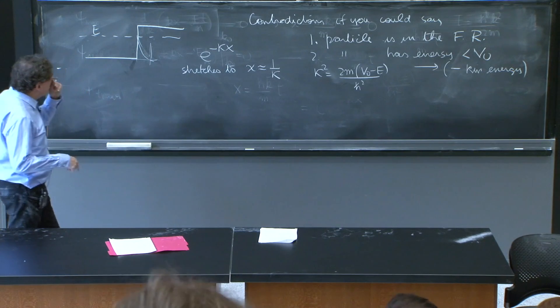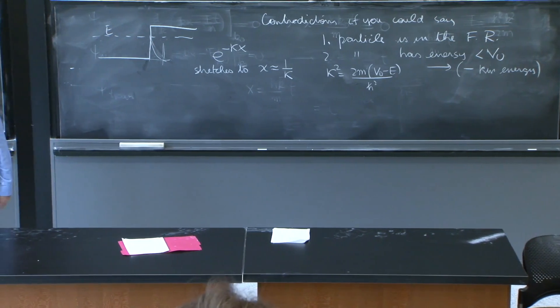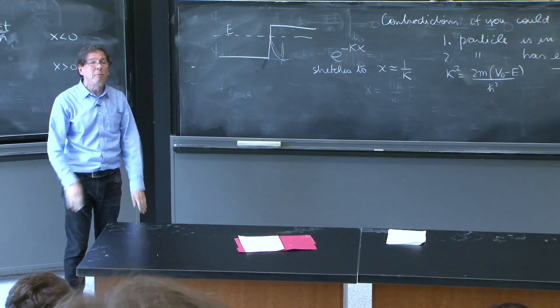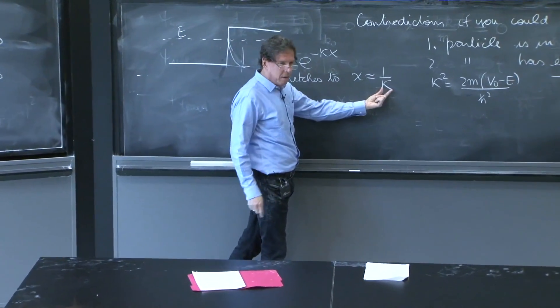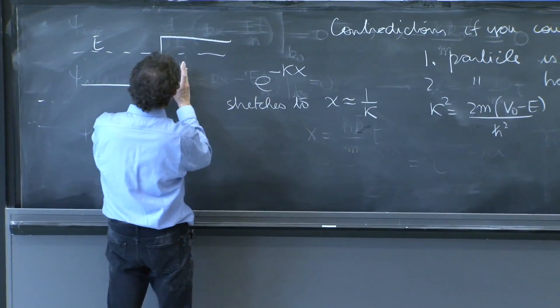Now, if you want to see and declare that you have this particle, you would have to measure position with precision a little smaller than this. Otherwise, if you measure with precision 10 times that, well, maybe it's to the left, maybe somewhere else.